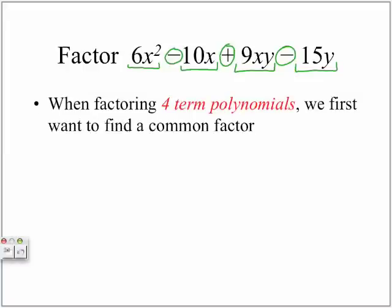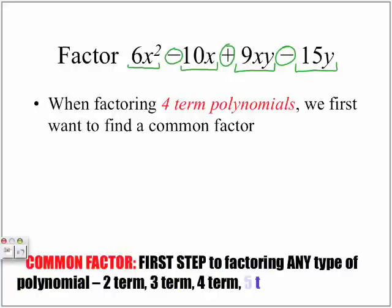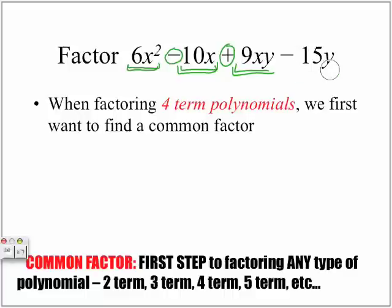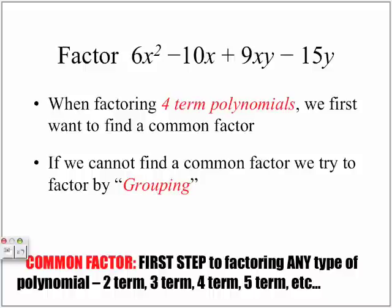When factoring four-term polynomials, we first want to find a common factor. The common factor is the first step to factoring any type of polynomial, whether we have two terms, three terms, four terms, five terms, etc. So we want to see if there is a number and a letter or letters that we can remove from each one of these terms. If you look closely, you'll find that none of them can be factored any further, so we cannot factor out a common factor.